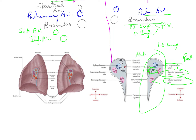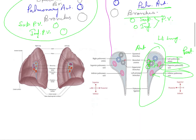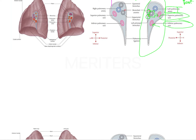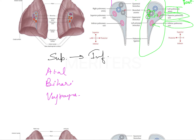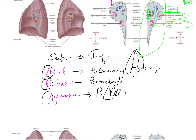You just remember this sequence and you can easily answer all the questions. There is one mnemonic to solve this question: going from superior to inferior, the mnemonic is 'Atal Bihari Vajpayee.' A stands for artery - pulmonary artery; B stands for bronchus; and V stands for pulmonary vein. So this is the actual sequence from superior to inferior.